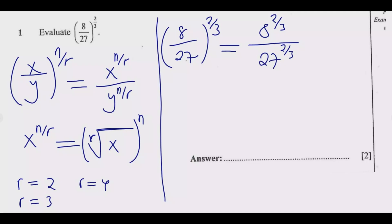This implies that we have the cubic root, because the r is 3, then the cubic root of 8, and we raise it to the power 2. Then over the cubic root of 27, we raise it to the power 2. Now in this case, the root is 3.